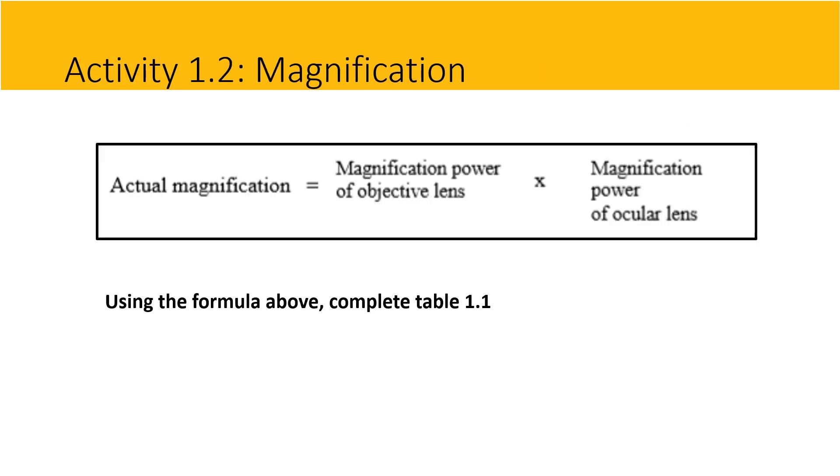Activity 1.2, magnification. Using the formula above, calculate the actual magnification by multiplying the magnification power of the objective lens by the magnification power of the ocular lens. Complete table 1.1.